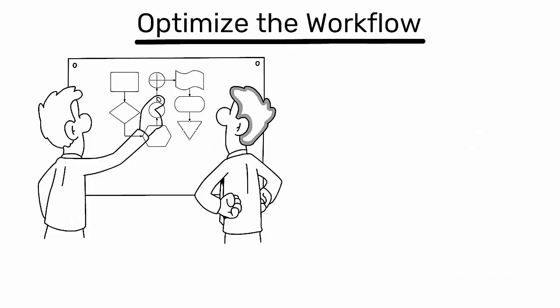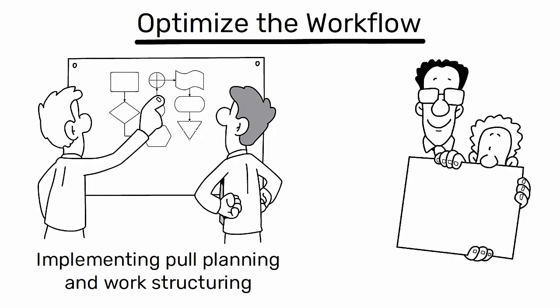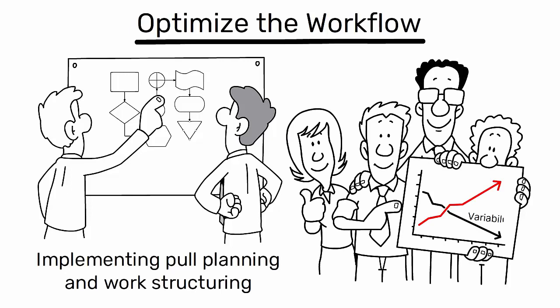Sixth, optimize the workflow. Create a more predictable and reliable workflow by implementing pull planning and work structuring. This helps in reducing variability and improving the flow of work on the construction site.